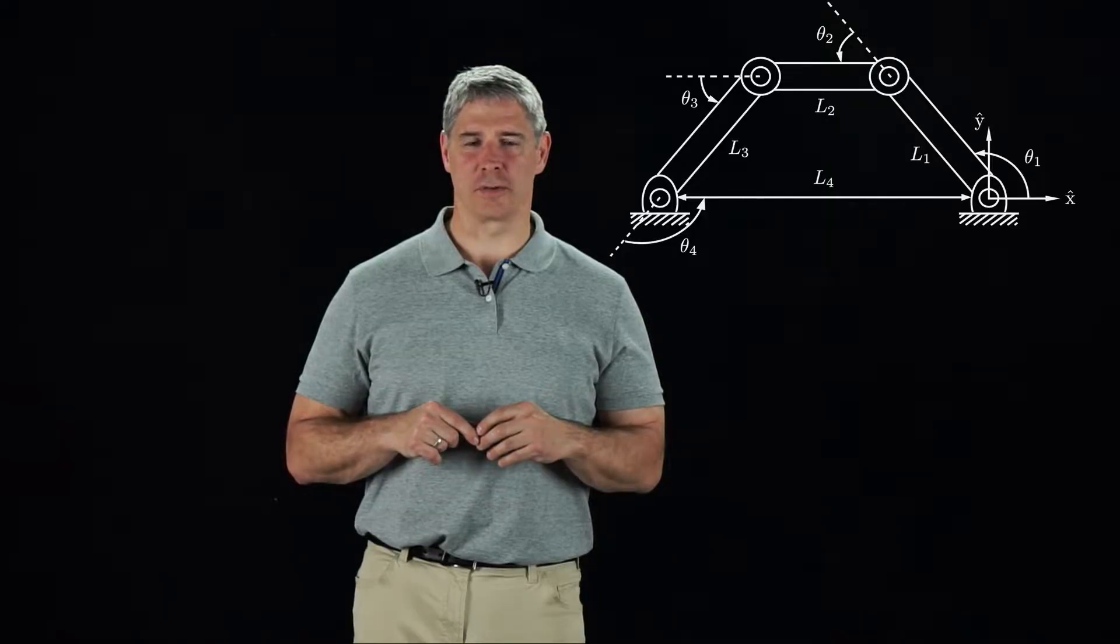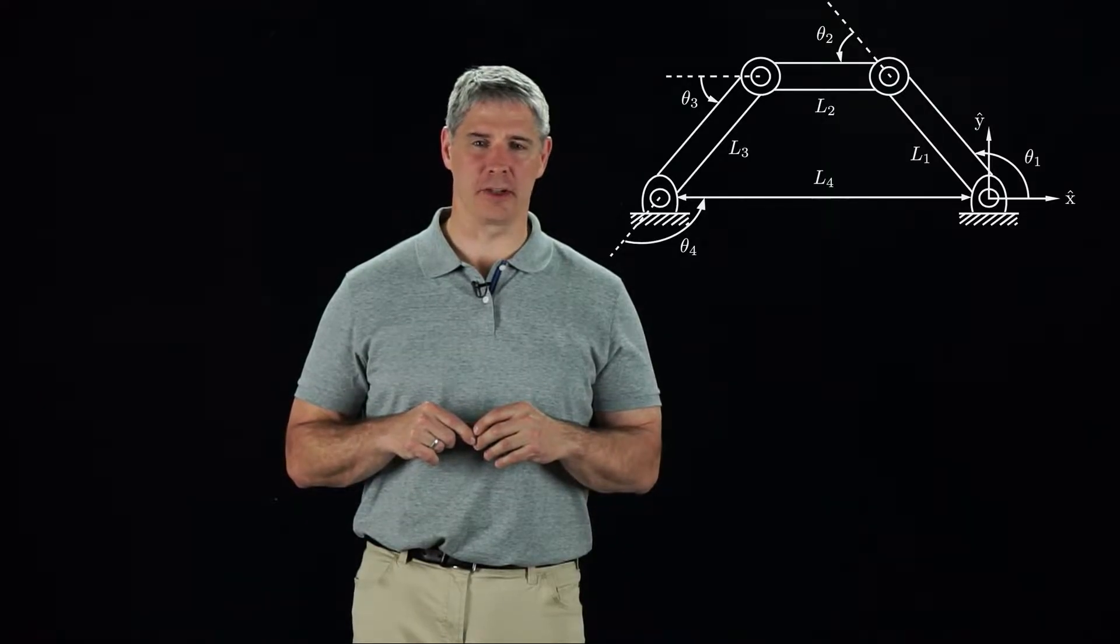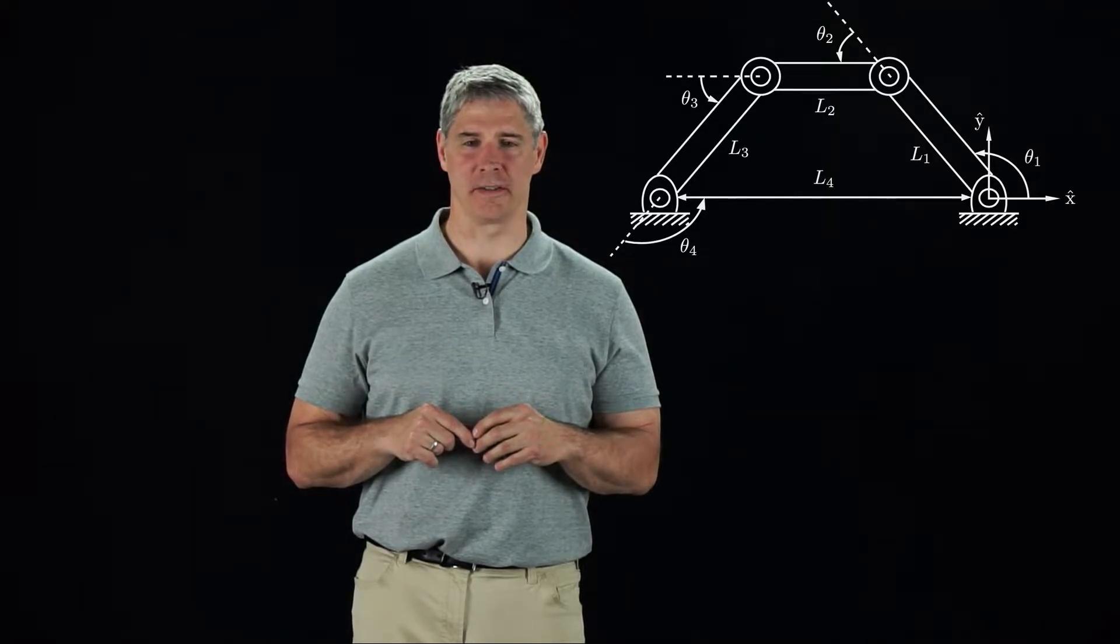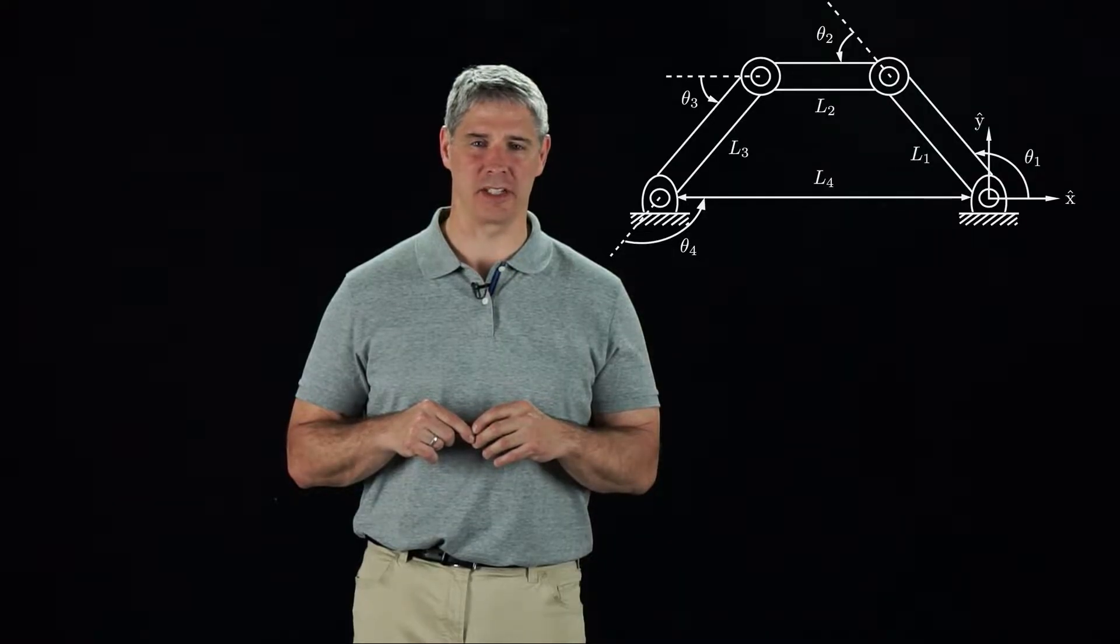For robots with links and joints forming closed loops, it is often easier to find an implicit representation of the C space rather than an explicit parametrization.